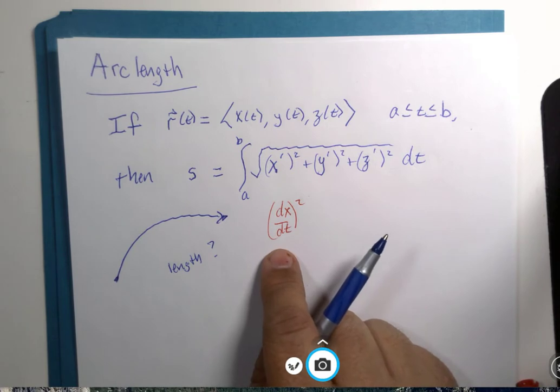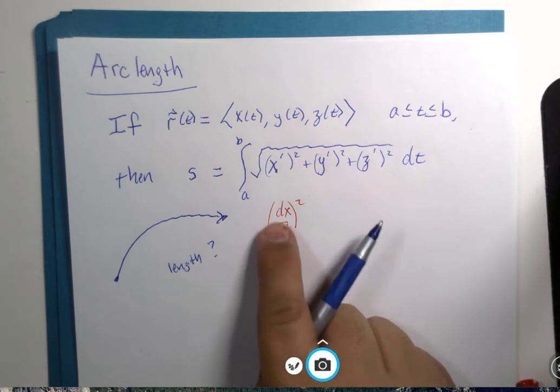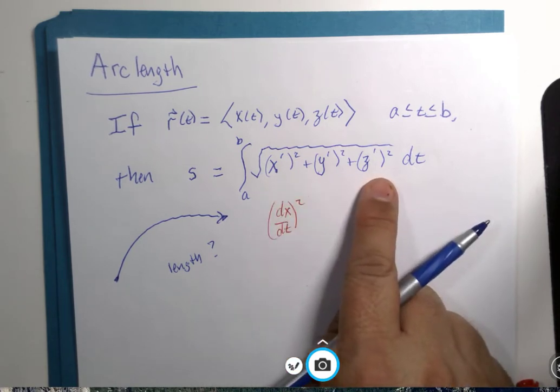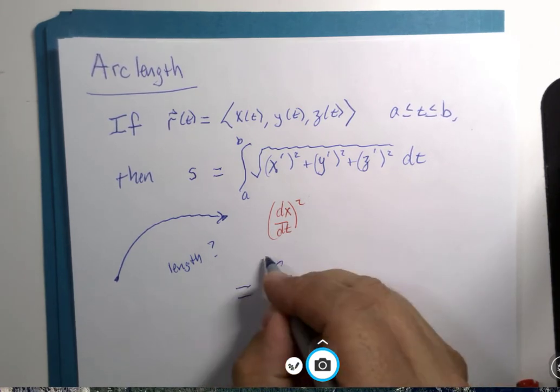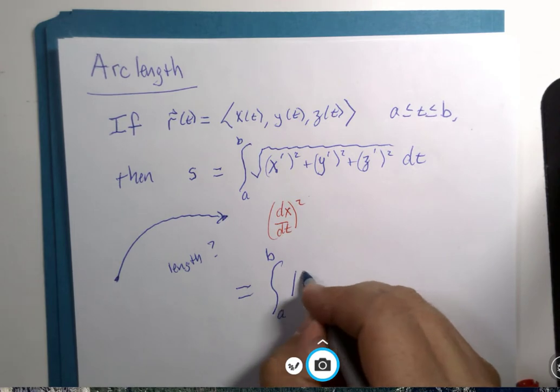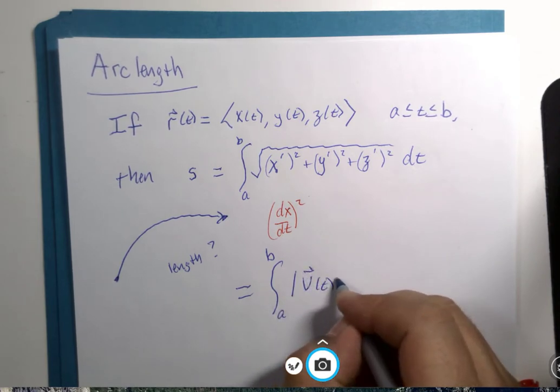And, in case this might look somewhat familiar, when you take the first derivative, you get velocity. This is equivalent to the magnitude of the velocity vector.